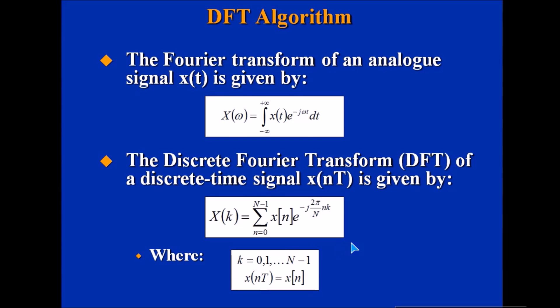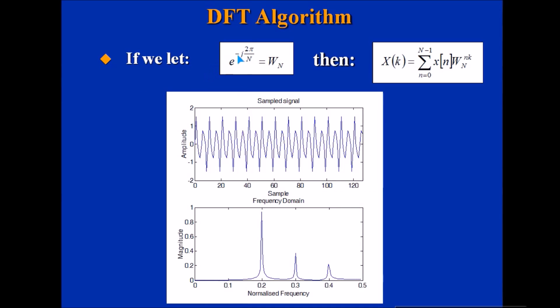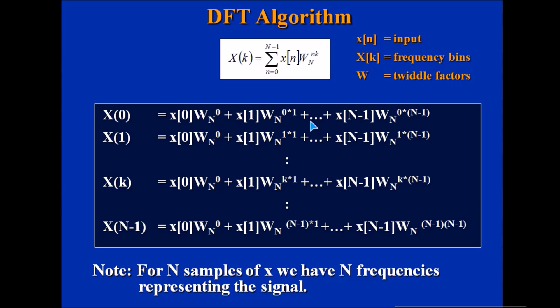If we assume this to be WN, this will be the twiddle factor. The DFT algorithm, when we start from 0 to N-1, these are the discrete numbers. For N samples of x, we have N frequencies representing the signals, where this number is inputs, these are frequency bins, and W is the twiddle factor.